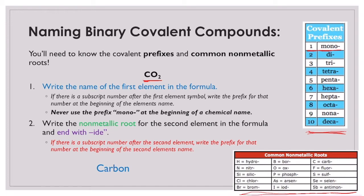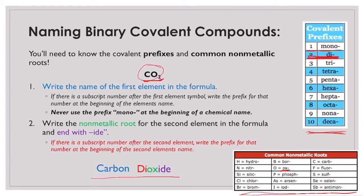Then I write the non-metallic root for the second element, ending with '-ide'. That's oxygen, so looking at the common non-metallic roots, the root for oxygen is 'ox', then I end it with '-ide'. If there is a subscript number after the second element, I write a prefix for that number at the beginning of the second element's name. In this case, I have a two after oxygen, so I look at the covalent prefixes - two is 'di'. So I add 'di' in front, giving me carbon dioxide. That is the name for this compound.